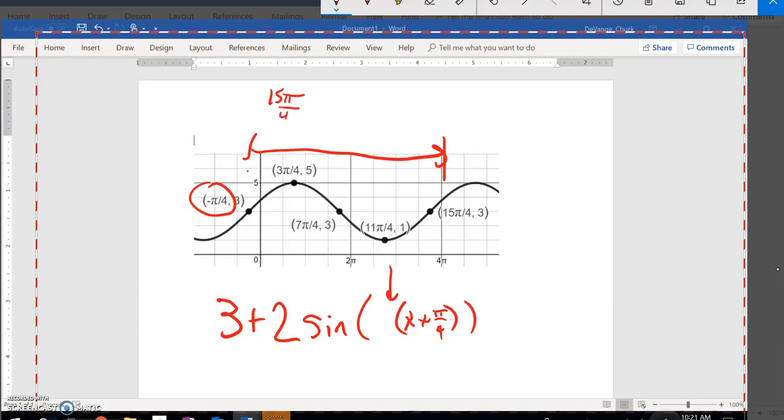I could say minus negative that, or I could just say plus that, plus pi over 4. So that's 16 pi over 4, which equals 4 pi.